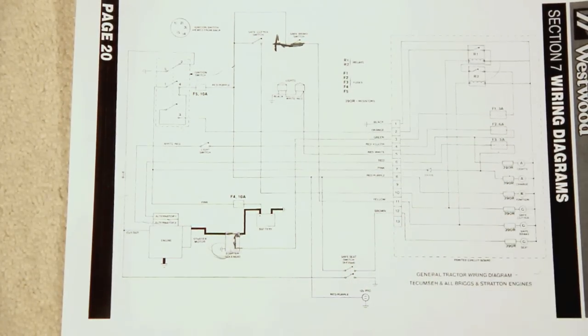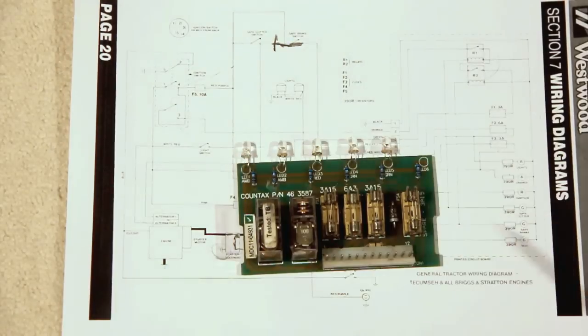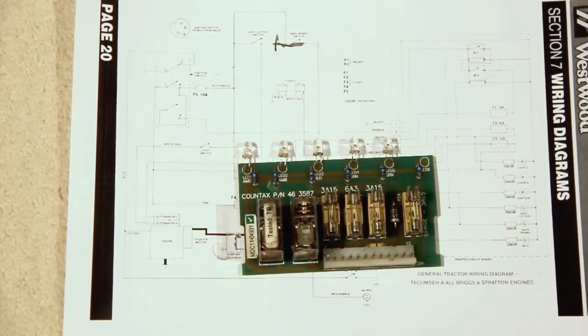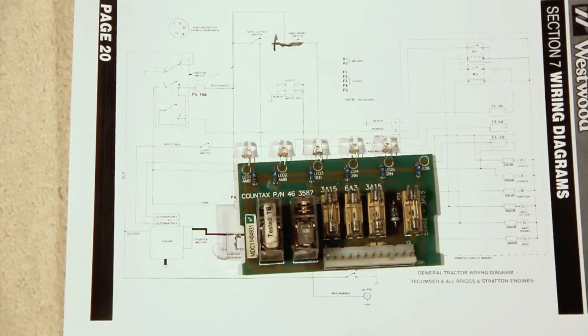So if you ever needed to replace one, if you had your printed circuit board, this one had gone, you didn't know how many amps to put in, refer to this, 6 amps. It's very simple.